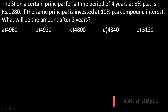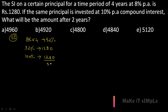In simple interest, the rate remains the same for every year. So 8% for 4 years = 32%. This 32% equals 1280. To find 100% (the principal): 1280 ÷ 32 × 100. Calculating: we get 4000. So the principal amount is rupees 4000.